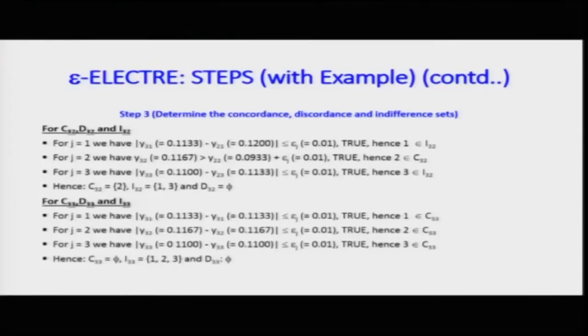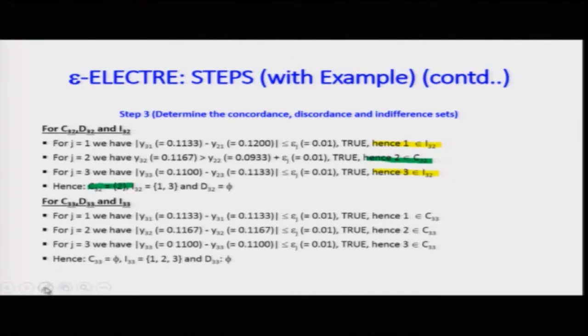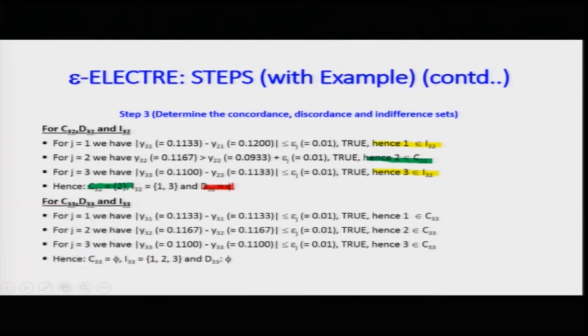For cell 3,2, we consider C32, D32, and I32. With epsilon=0.01 for J=1, 2, 3: J=1 is indifference, J=3 is indifference, and J=2 falls in the concordance set. So C32 has one element which is J=2. The discordance set D32 is null, and the indifference set I32 contains J=1 and J=3.